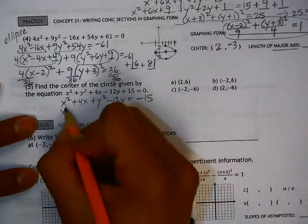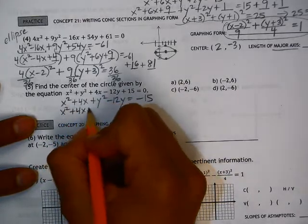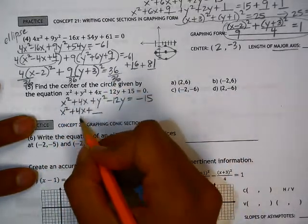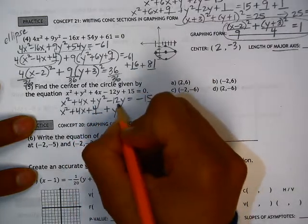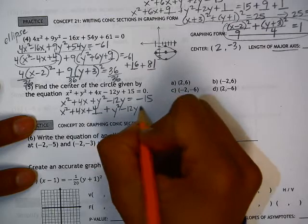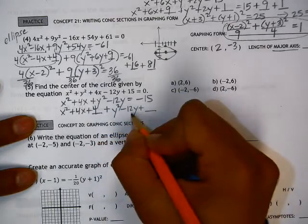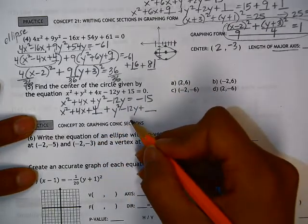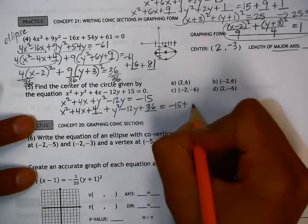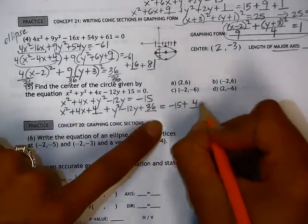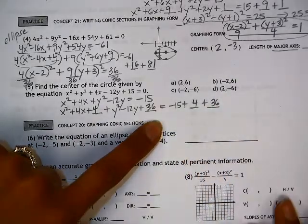And then we can complete the square. So for the x's, b divided by 2 squared. 4 divided by 2 is 2. 2 squared is 4. And for the y's, b divided by 2. So negative 12 divided by 2 is negative 6. Square that and that gives you 36. We must add these two numbers over to the other side as well. So that's plus 4 and plus 36.